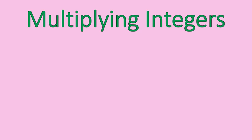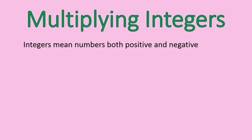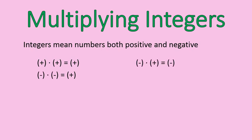Multiplying integers. First off, an integer means numbers that are both positive and negative, so we are talking about multiplying positive and negative numbers together. The general rule: a positive times a positive gives you a positive; a negative times a negative gives you a positive; a negative and a positive gives you a negative; and a positive times a negative gives you a negative. This works with multiplying — these are not the rules for addition and subtraction, so please don't get those confused.